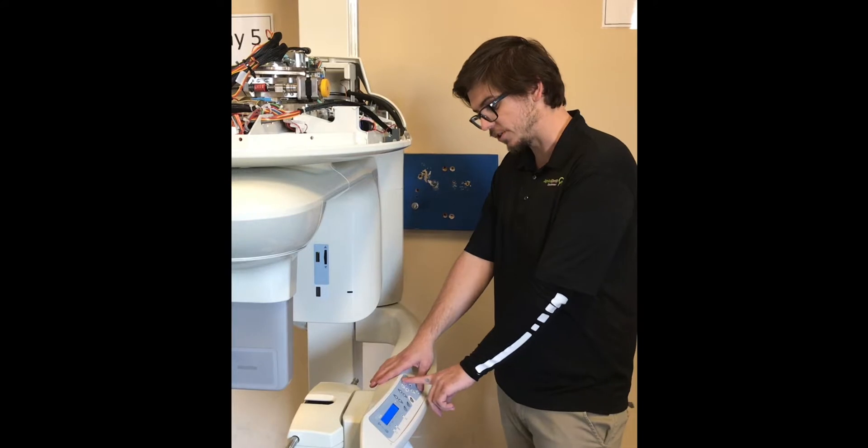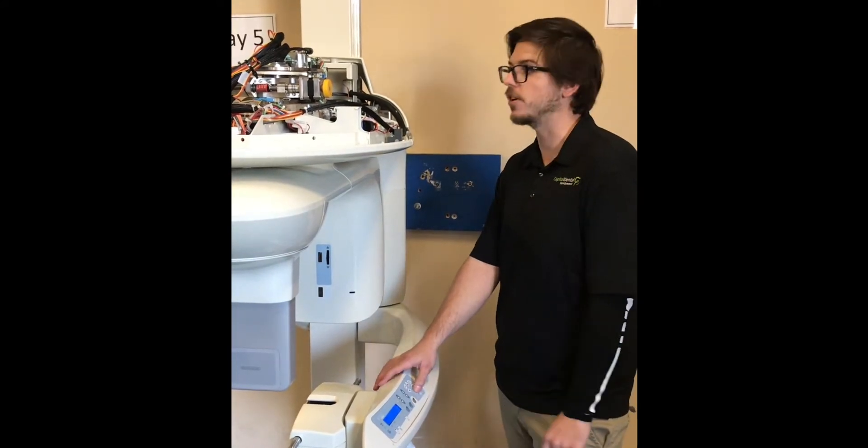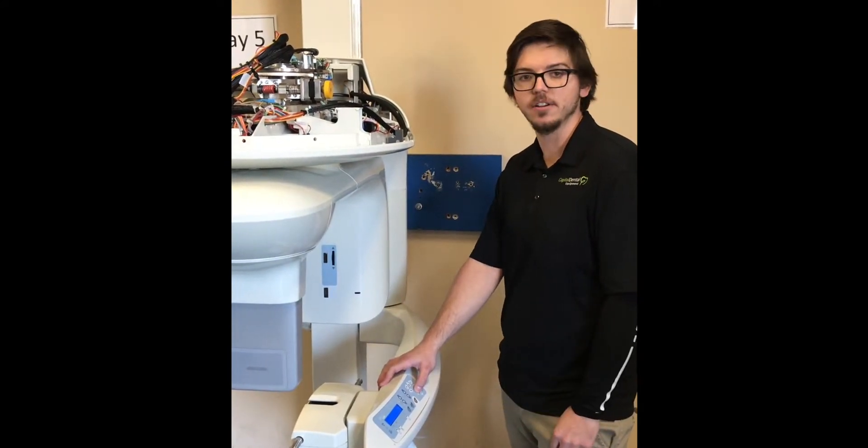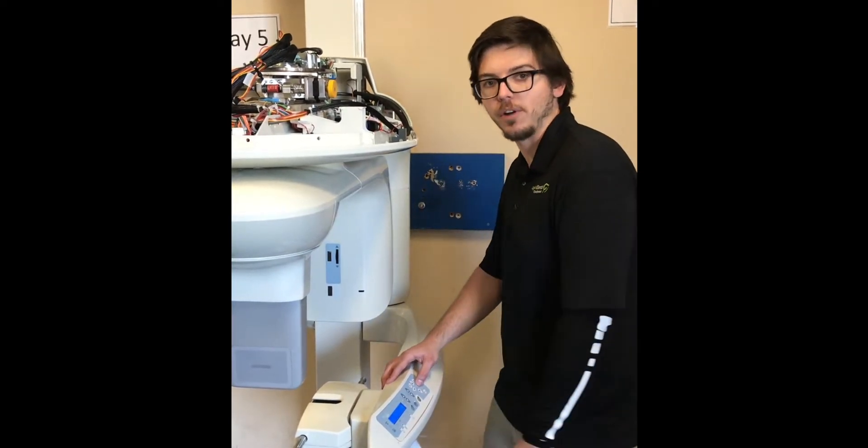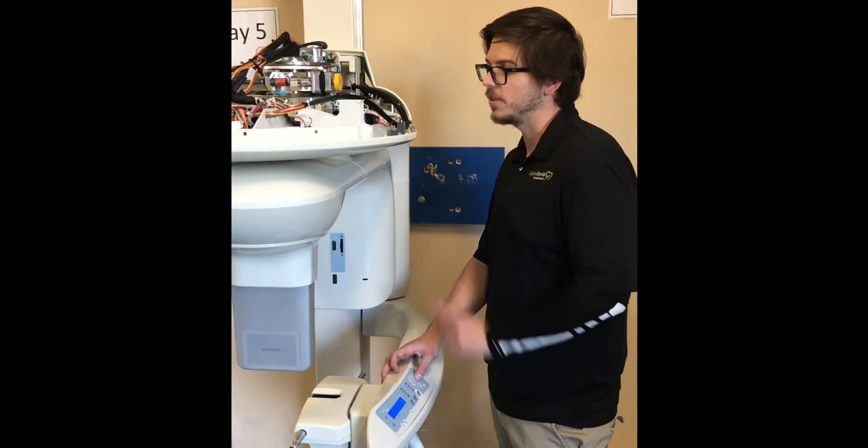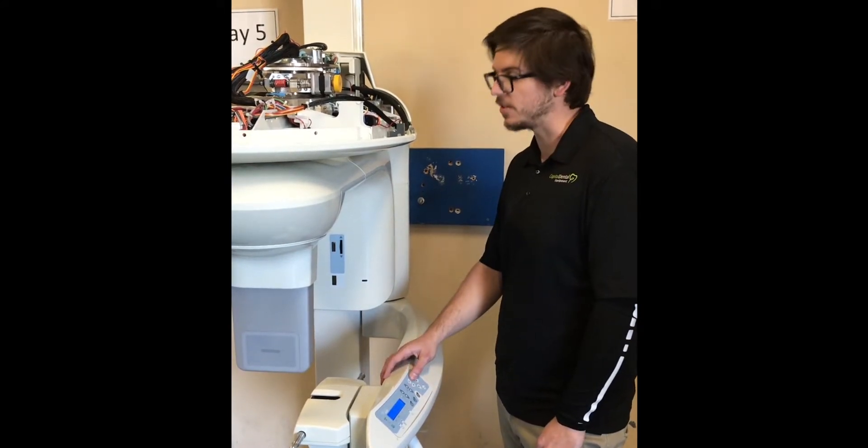With the directional pad on the control panel, you're going to start by driving it all the way down. You will hear that beep when it hits the limit switch. Then you're going to go all the way to the right. Once again, hearing the beep that it has reached its limit,